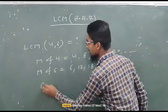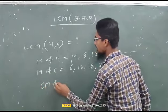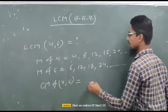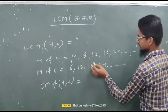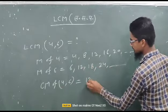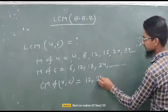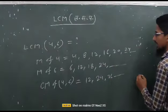We have common multiples of 4 and 6. What is the common multiple of 4 and 6? 12, 24, 36 and so on.